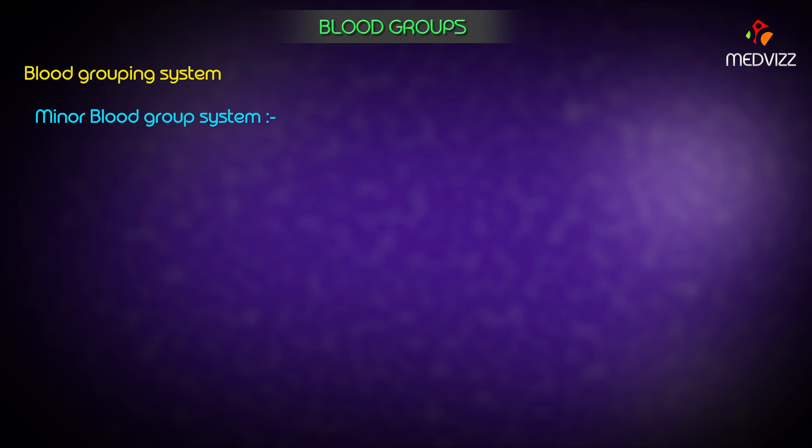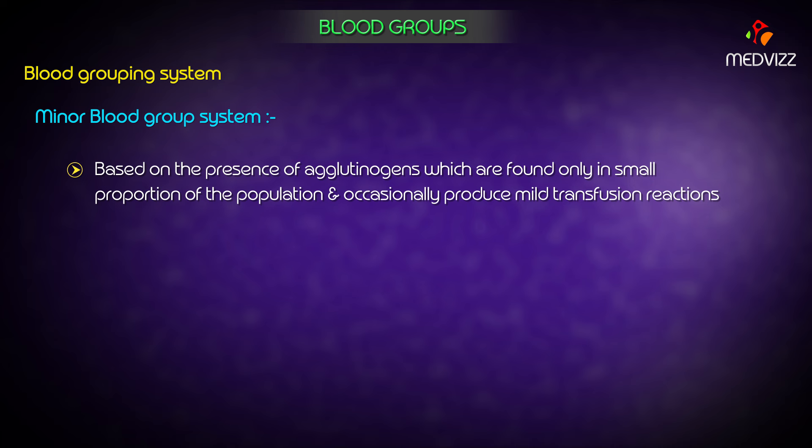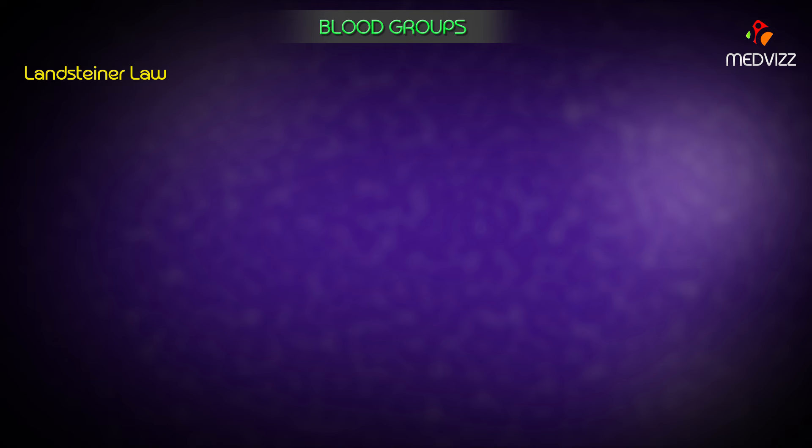Minor blood group systems are based on the presence of agglutinogens found only in a small proportion of the population and occasionally produce mild transfusion reactions. These include the MN blood grouping system and the P blood group system.